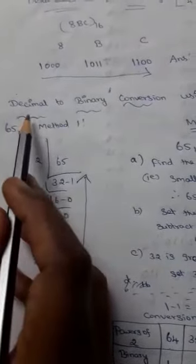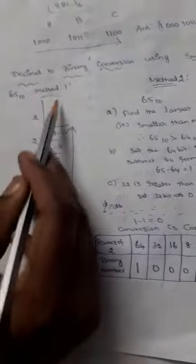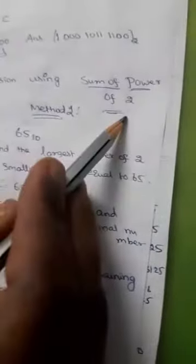Next we have to see decimal to binary conversion using sum of power of 2. We already see this method no 65 base 10 method method 1 we are doing this repeated, what is this method called? Repeated division method by 1. So this is the first method we already seen the next method is sum of power of 2.